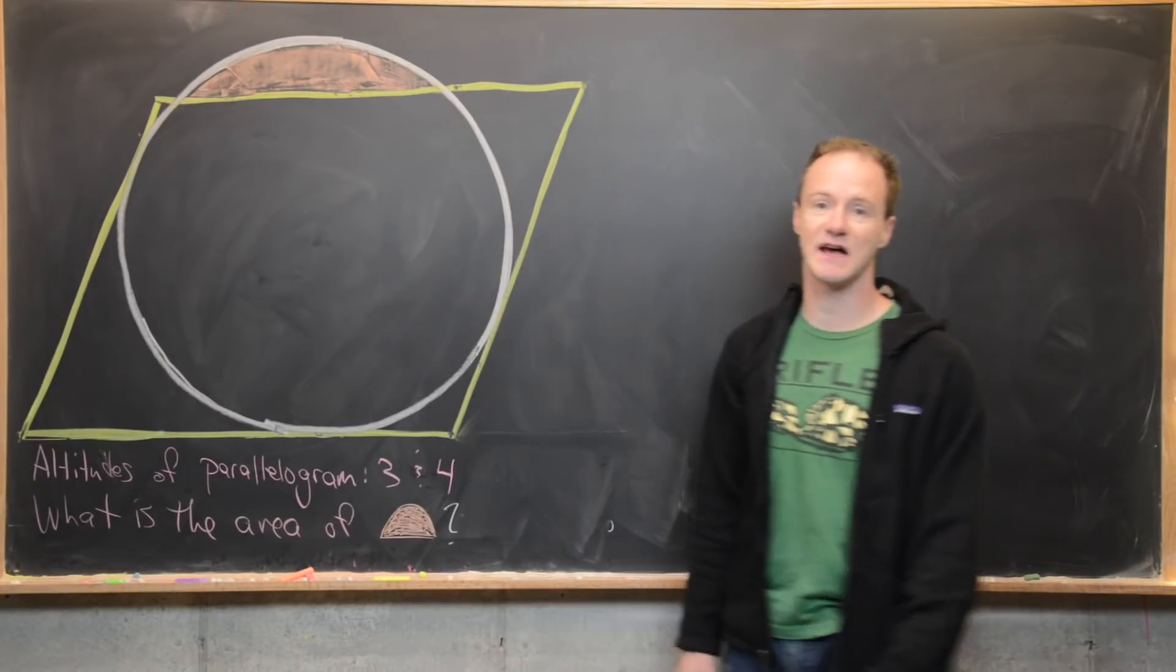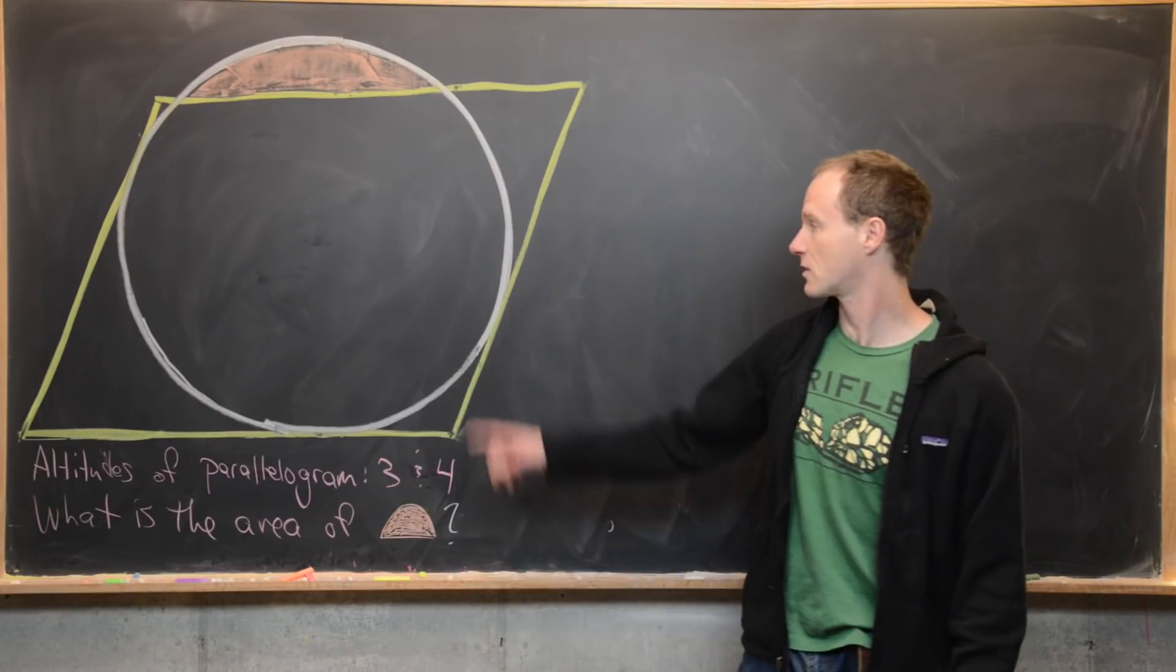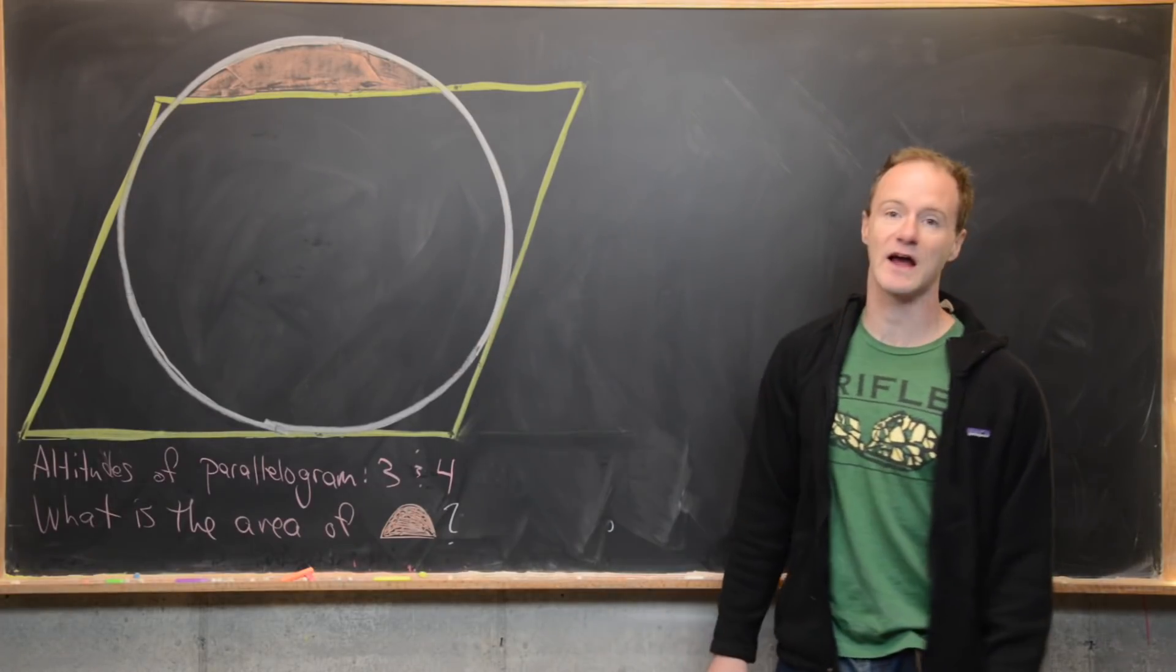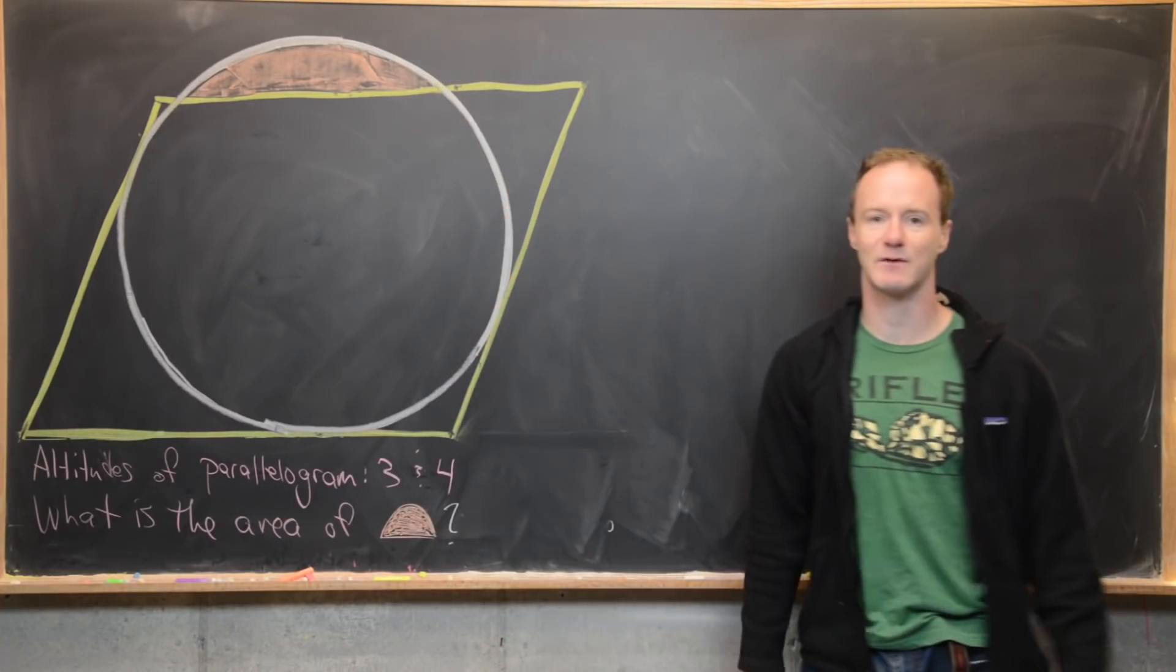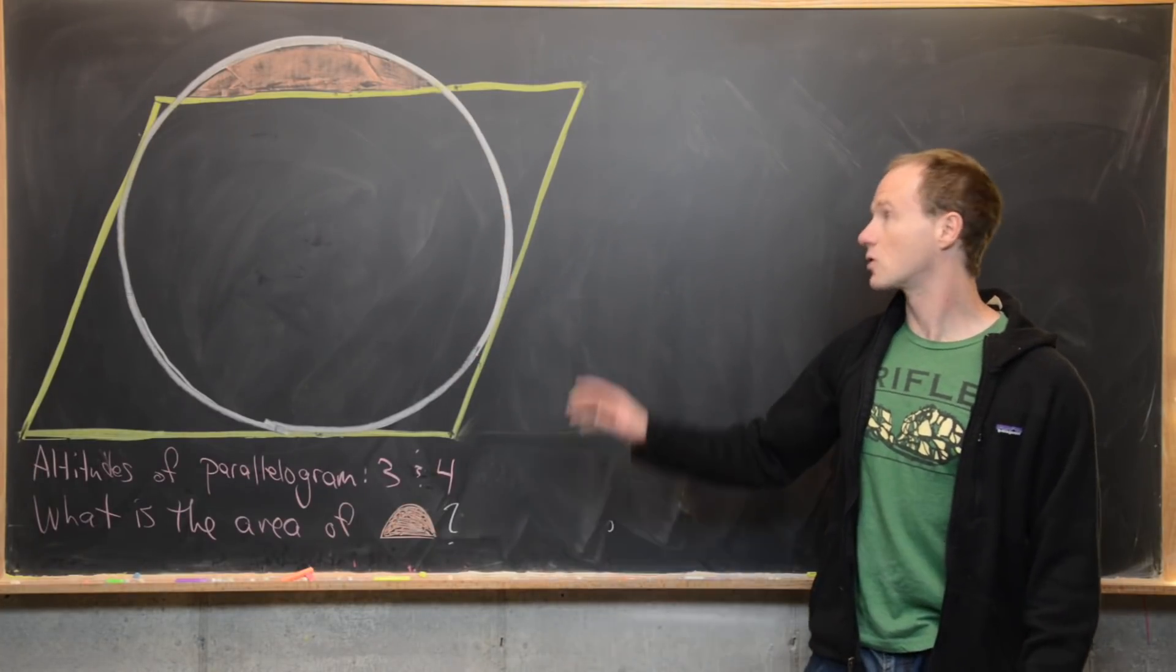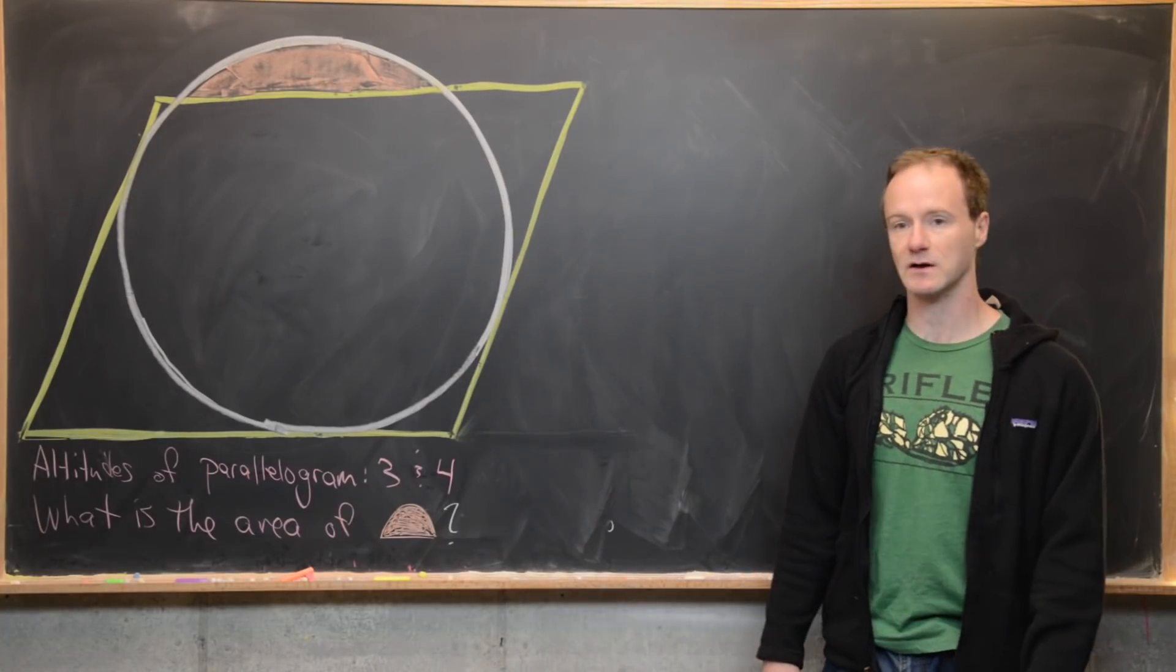It kind of ooches out the top of it, and so notice it is tangent to the bottom line segment of the parallelogram, the left and the right line segment of the parallelogram, but it goes outside of the top of the parallelogram. And our goal is to find the area of this bit which is outside of the parallelogram.